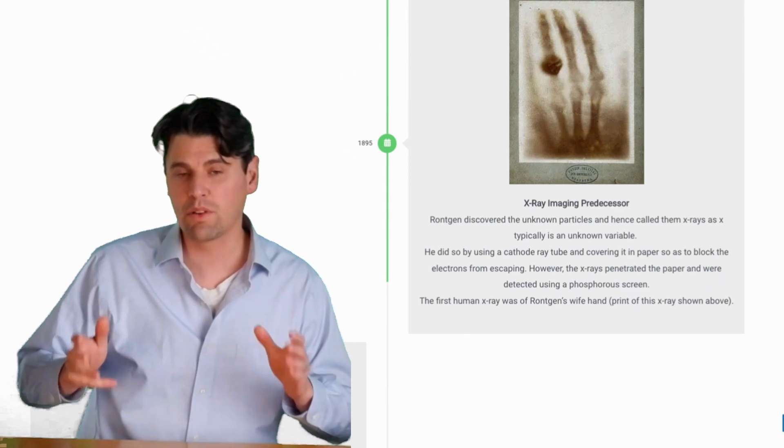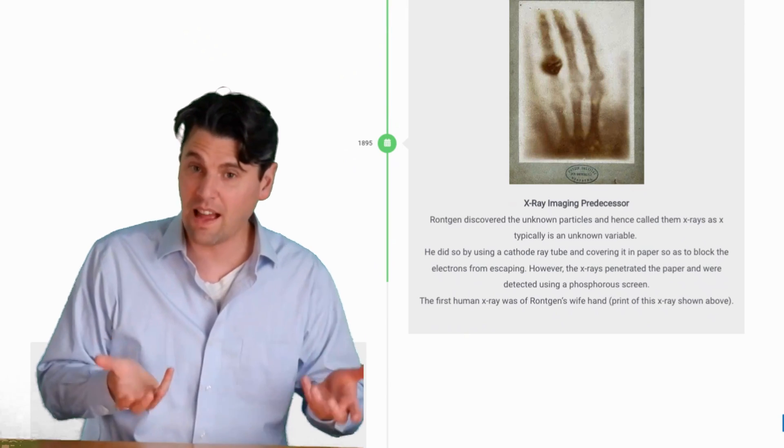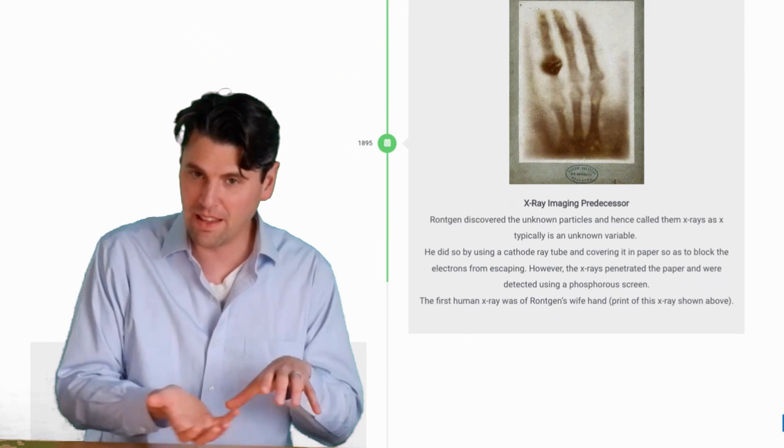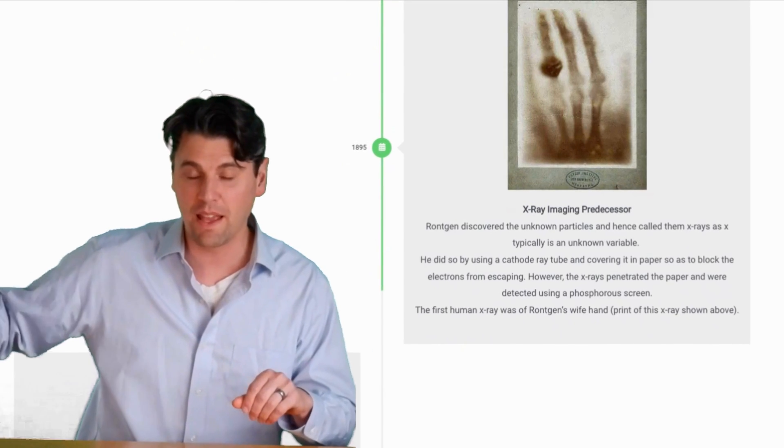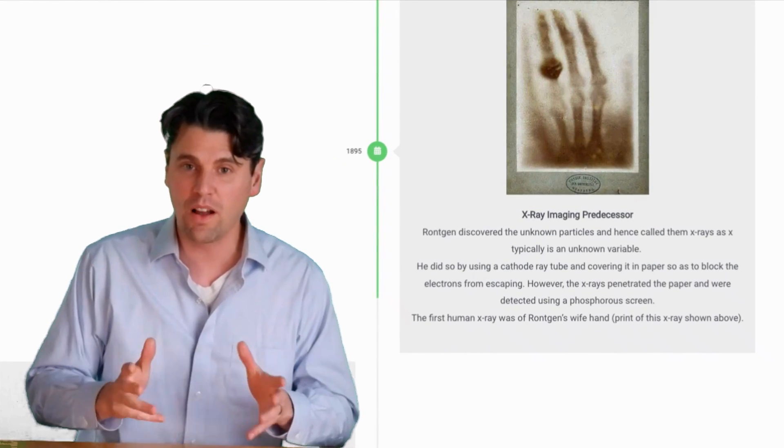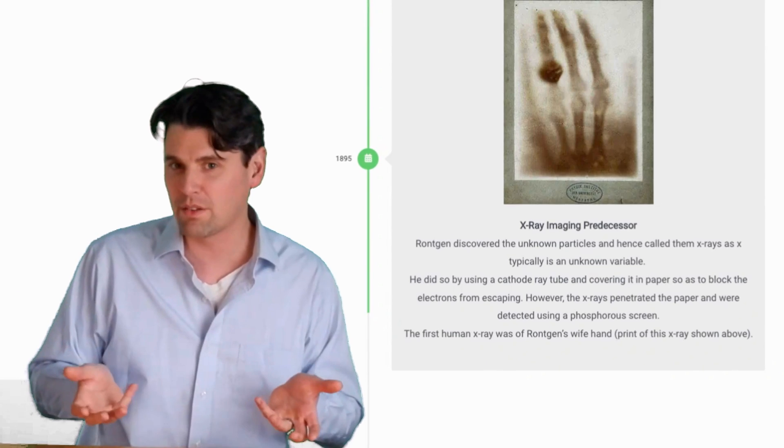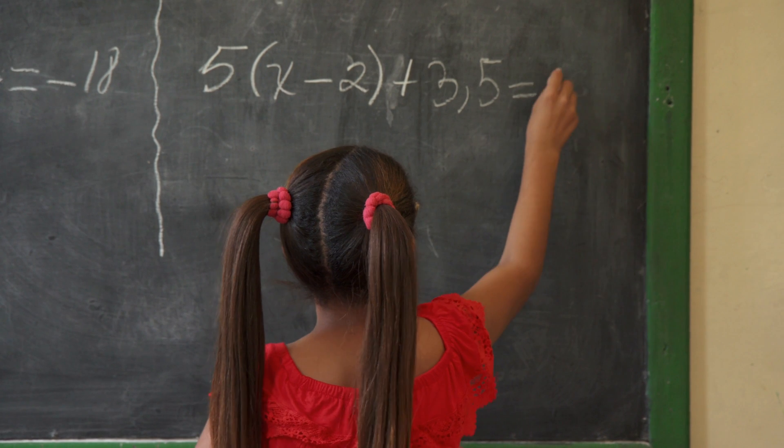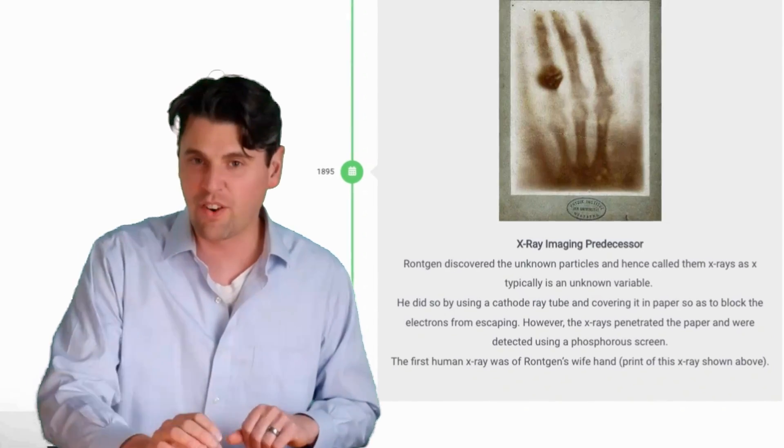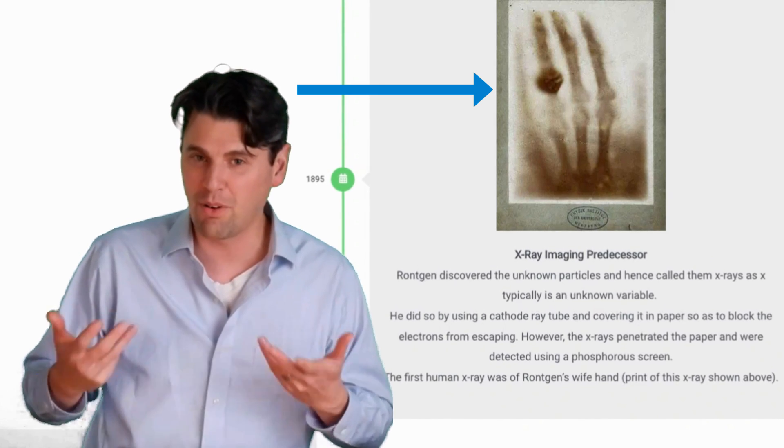In 1895, Röntgen was playing around with that kind of cathode ray tube. He covered the outside of the tube so that he was stopping the electrons from exiting. He was still seeing difference on a phosphor plate behind him, and that was actually X-rays. He didn't know at the time what X-rays were, and that's why they called it X for unknown. This is one of the first radiographs of all time, which is Röntgen's wife's hand.